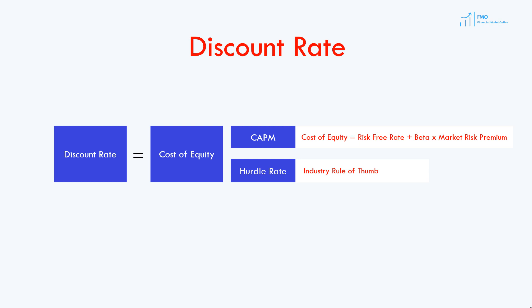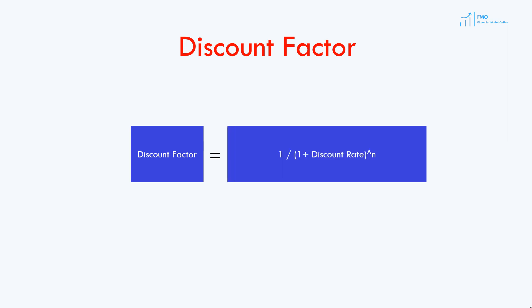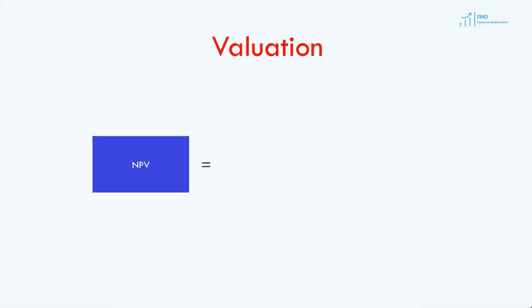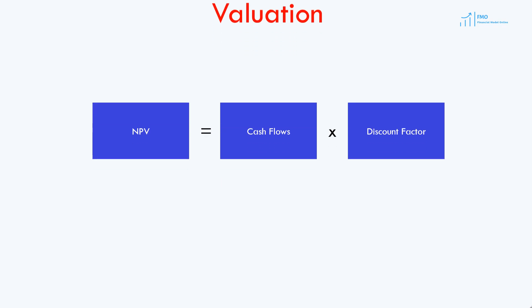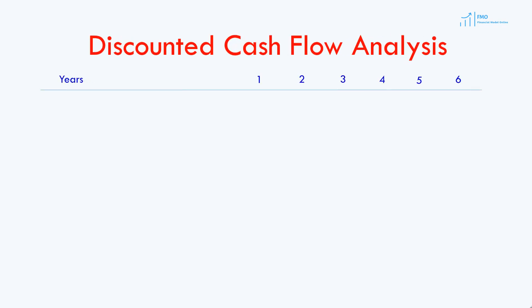Once we determine the discount rate, we typically convert it into a discount factor, which is 1 divided by (1 plus the discount rate) raised to the power of the number of years from the valuation date. The valuation of an asset is then represented by net present value, which is total cash flows times the discount factor. Let's quickly review an exercise on discounted cash flow analysis.